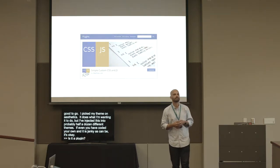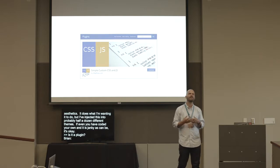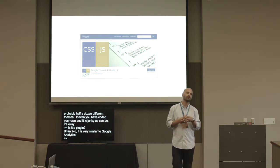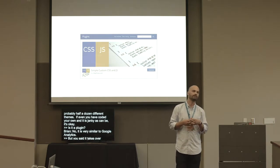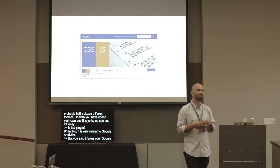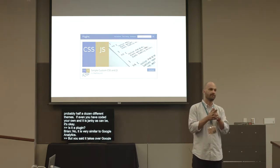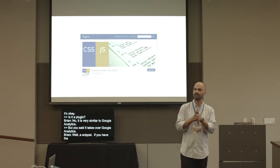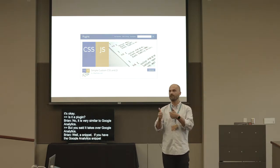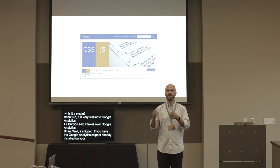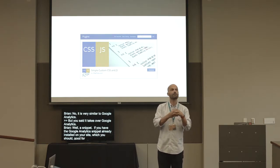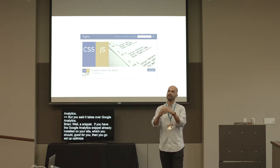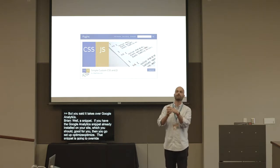Google Optimize isn't a plugin — it's a standalone app, just like Google Analytics, where you go log in and look at stuff. They share a snippet and they integrate. If you have the Google Analytics snippet already installed on your site, when you set up Optimize and they give you that snippet, it's going to overwrite the Google Analytics snippet. That's your new combined Google Analytics and Optimize snippet.